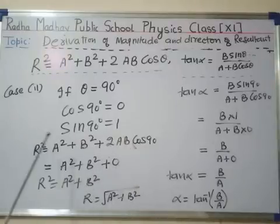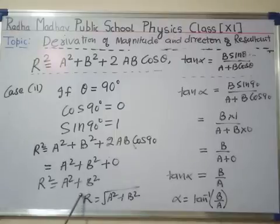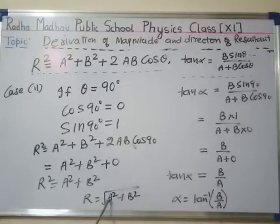This becomes 0, so R² = A² + B². The magnitude of R equals the square root of A² + B².